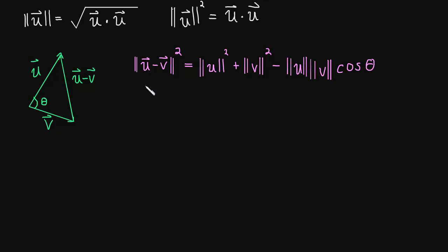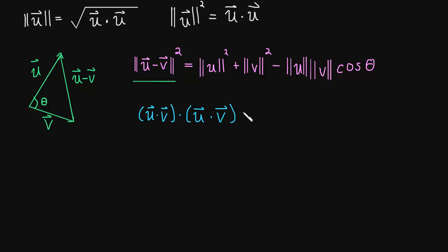Now we're going to examine the left side — the length of u minus v squared. That's just u minus v dotted with u minus v. Let's expand that: u dotted with u minus v, dotted with u minus v. u dot u is the length of u squared, so let's write that.